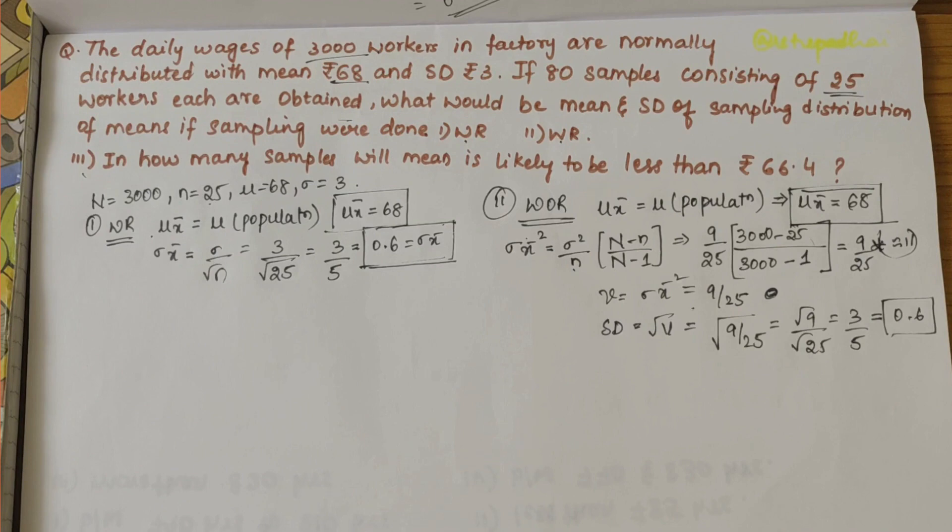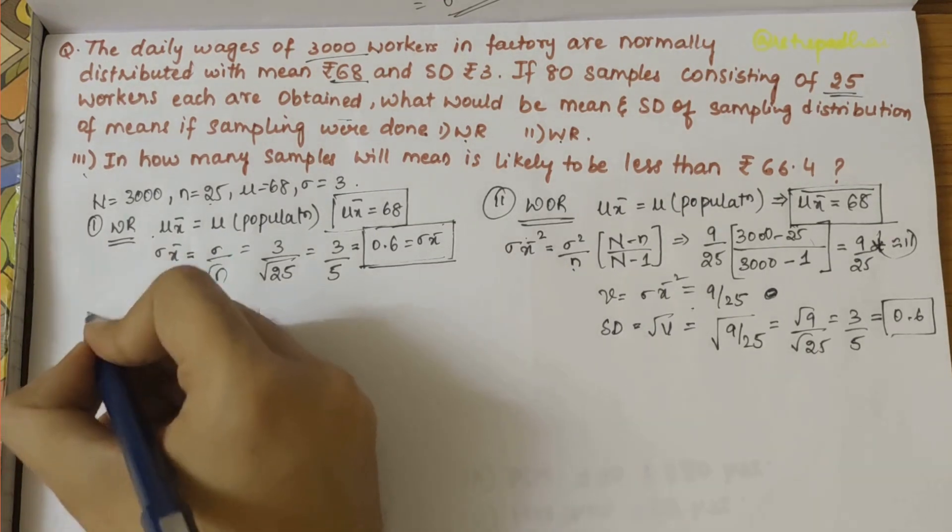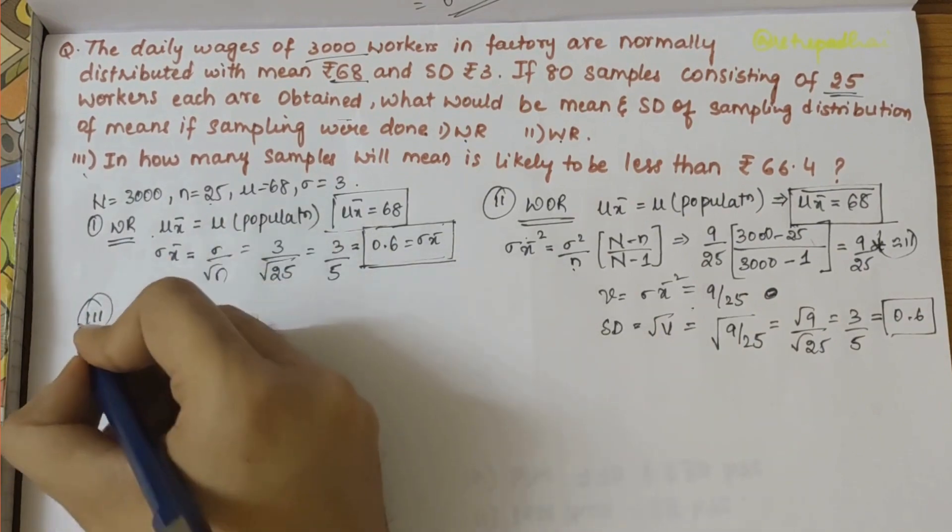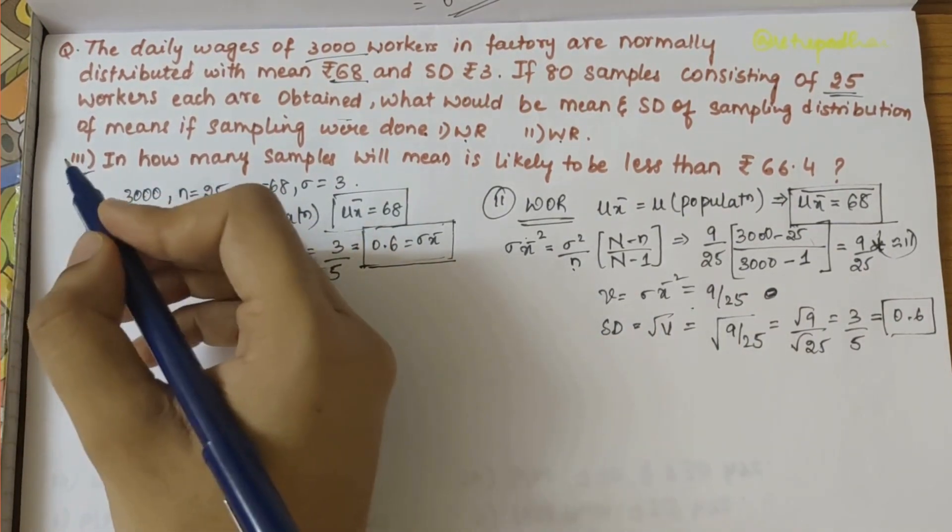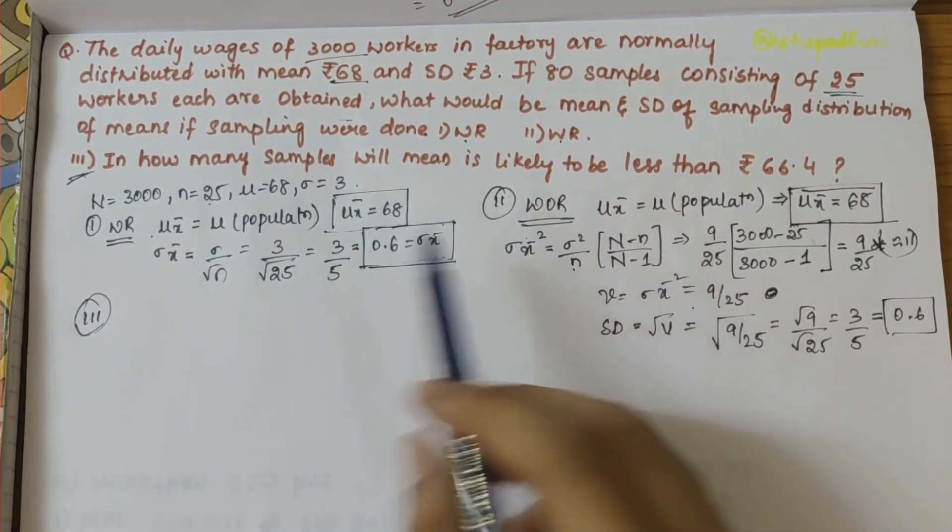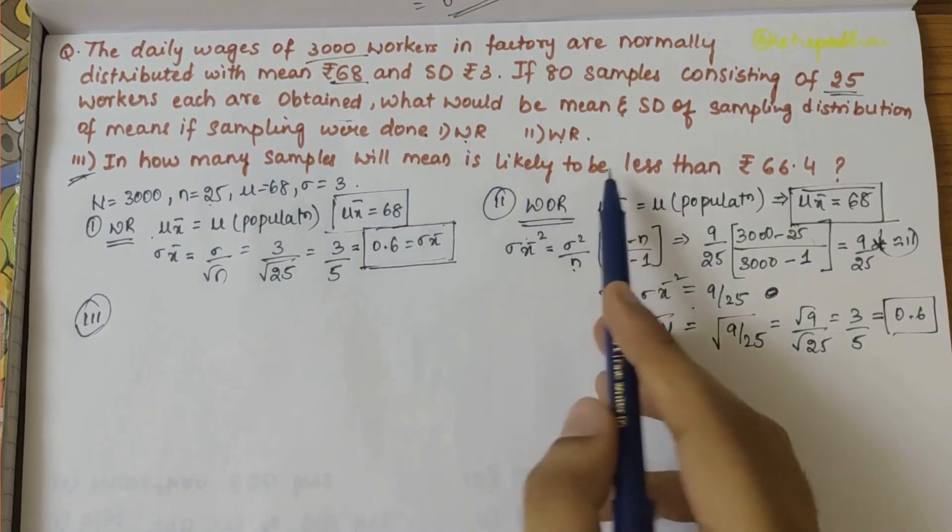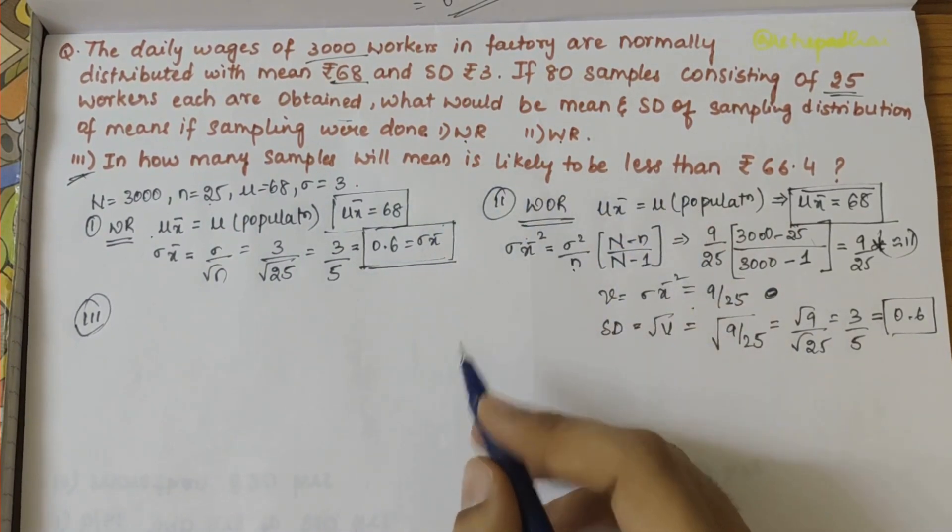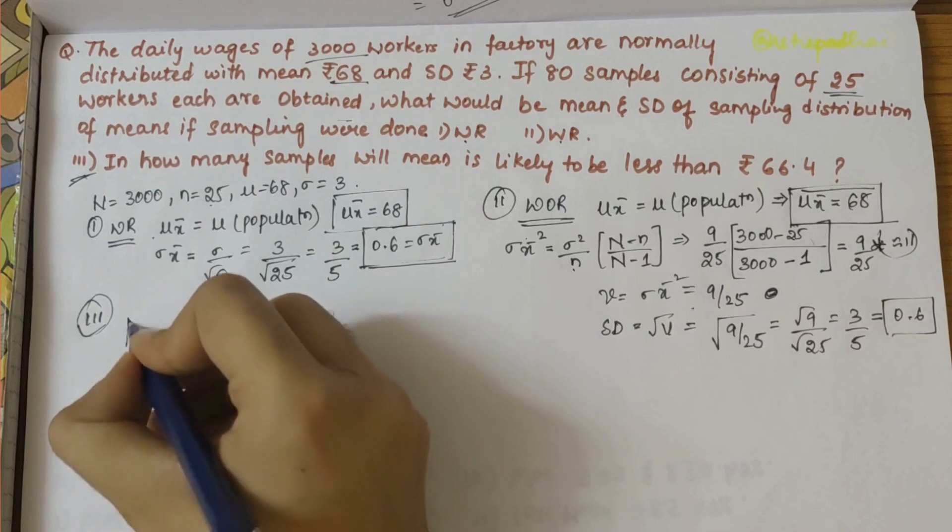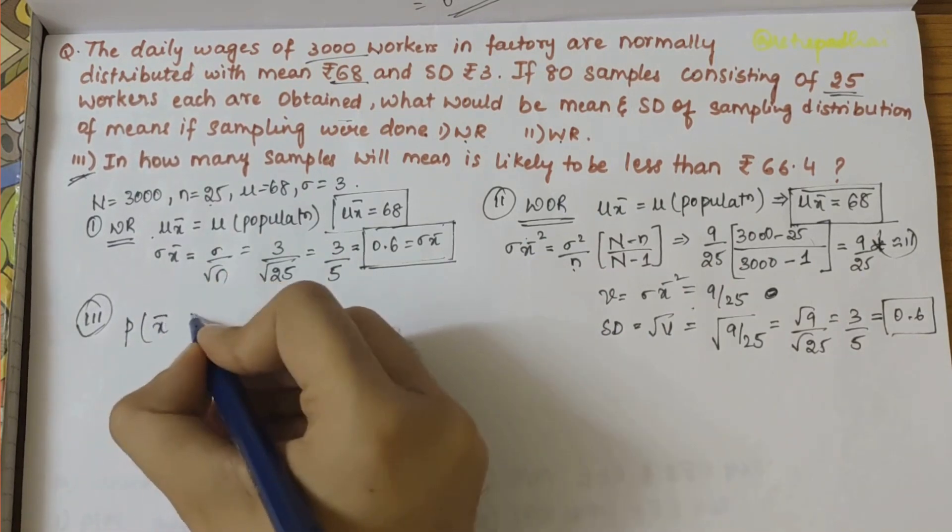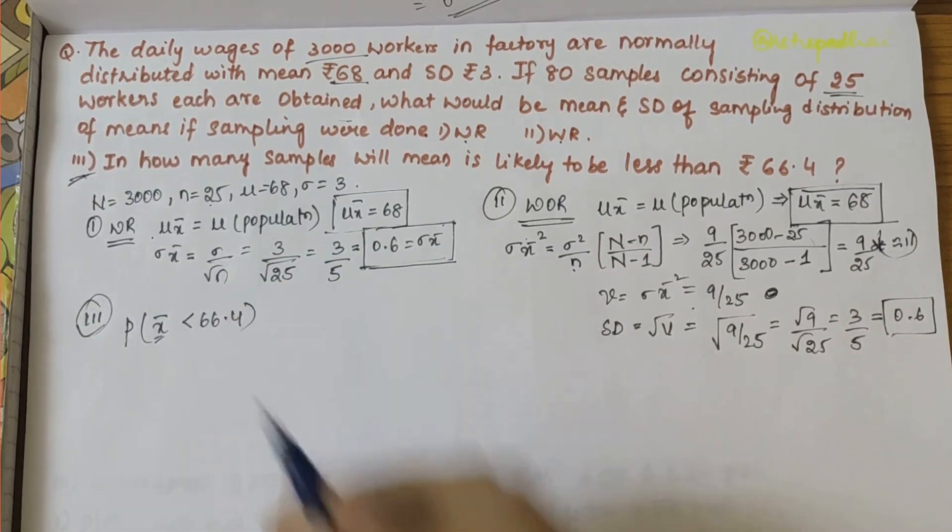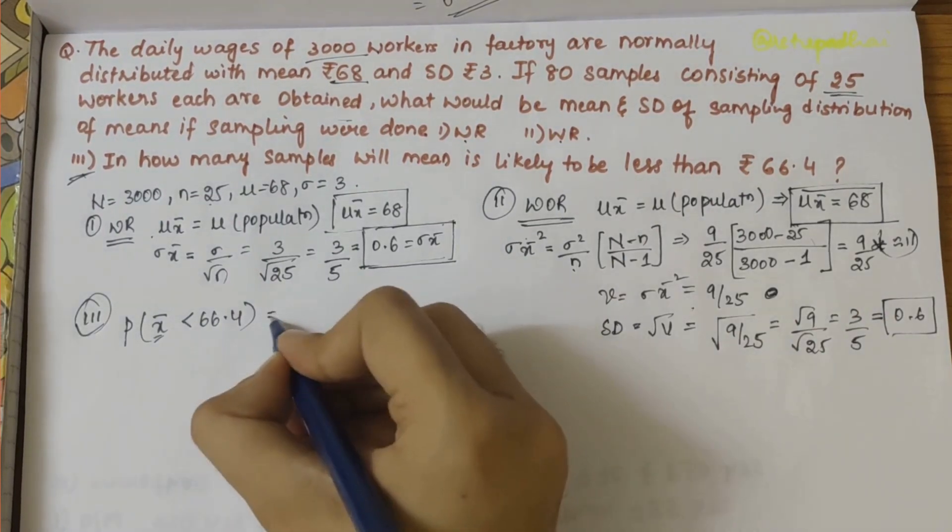Now next, let's look into the third part of our question which says in how many samples will mean is likely to be less than 66.4. So P(x̄ < 66.4), where x̄ is mean.